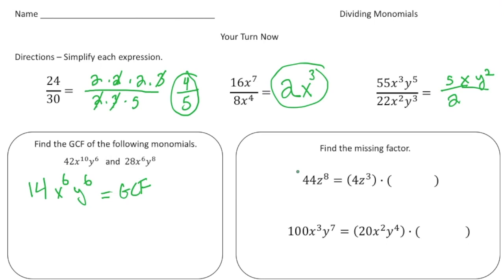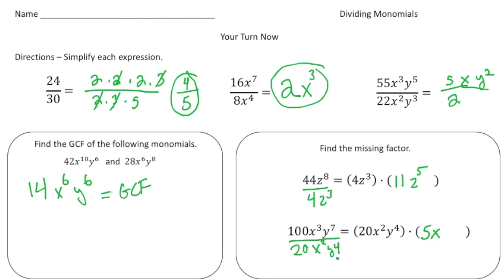Last but not least, we want to find the missing factor. 44z to the eighth equals 4z cubed times the unknown — divide 44z to the eighth by 4z cubed: 44 divided by 4 is 11, and z to the eighth divided by z cubed is z to the fifth power. For the next one, divide 100x cubed y to the seventh by 20x squared y to the fourth: 100 divided by 20 is 5, x cubed divided by x squared is x, and y to the seventh divided by y to the fourth is y cubed.